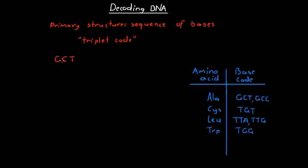A triplet code of GCT indicates the production of alanine is required. Every amino acid that our body produces has one or more triplet codes associated with it. If that triplet code occurs somewhere along our DNA molecule, it tells our body to produce the given amino acid, and those amino acids are then synthesized into proteins.